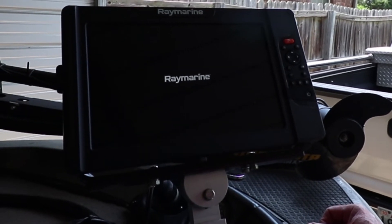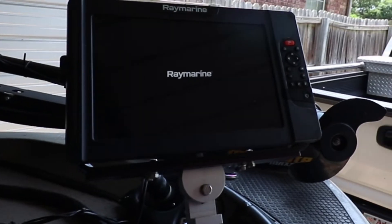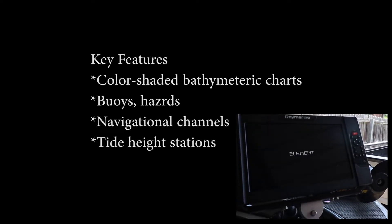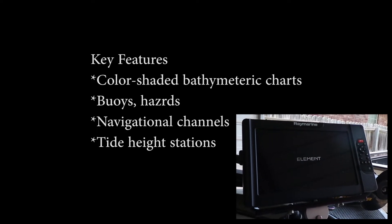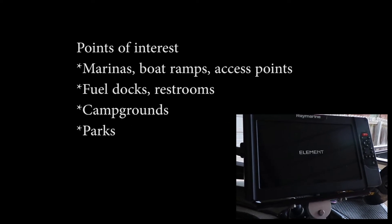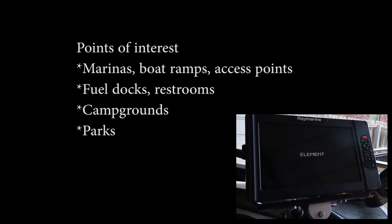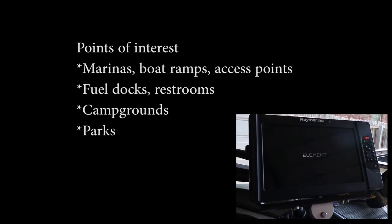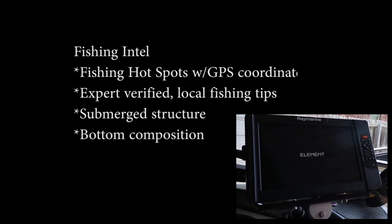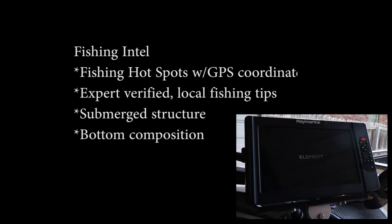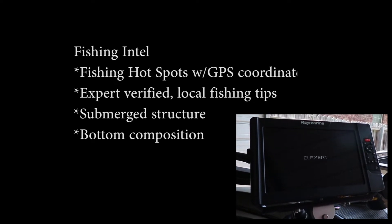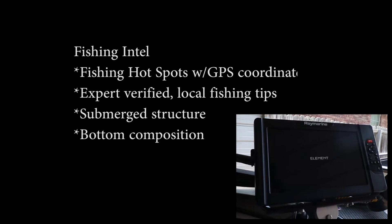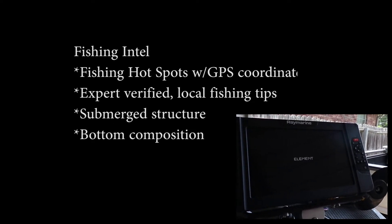We'll see what it does when it first powers up with the new Lighthouse NC2 chart. Things you're going to see highlighted on the chart: it's a navigational chart, so you'll see buoys, hazards, the navigable channel. You'll also see points of interest like marinas, boat ramps, access points, fuel docks, and parking lots. You're also going to find fishing intel — expert local guides have marked hot spots so you can go over them and actually see one.